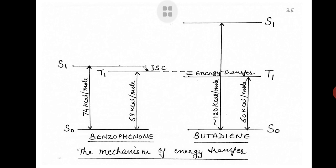The mechanism of energy transfer from benzophenone to butadiene is shown in the figure. The mechanism becomes clear when we view the energy relationships of the various excited states of the two substances. The energy gap between the S1 and T1 states of benzophenone is only 5 kcal/mol, so there is very efficient inter-system crossing. In contrast, the energy gap between the S1 and T1 states of butadiene is very large, so ISC is not possible.